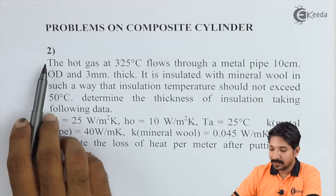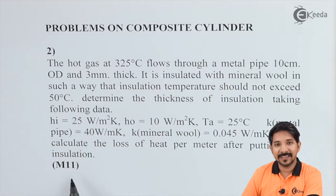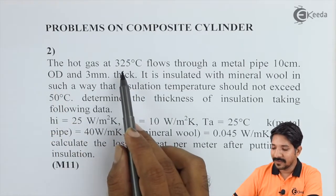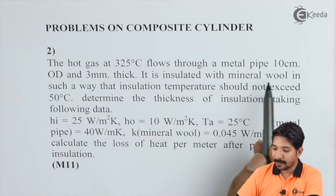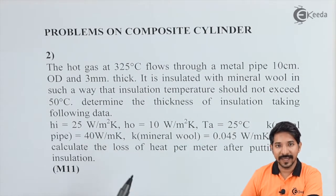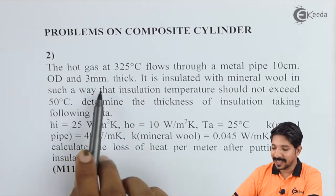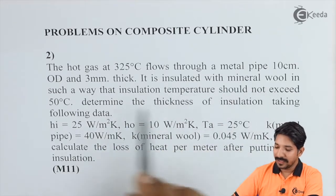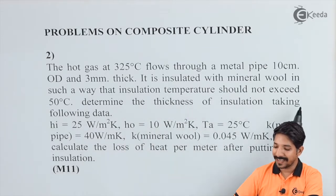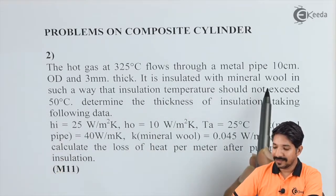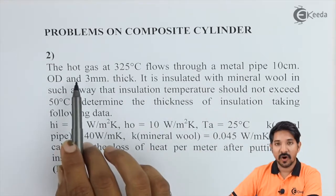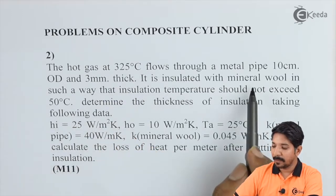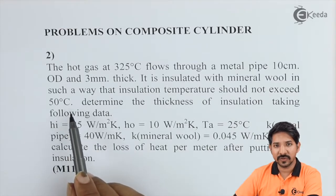In this problem, number two on composite cylinder, the question was asked in May 2011 in Mumbai University. The question says: hot gas at 325 degrees Celsius flows through a metal pipe of 10 cm outer diameter and 3 mm thick. It is insulated with mineral wool such that the insulation outer temperature should not exceed 50 degrees Celsius.